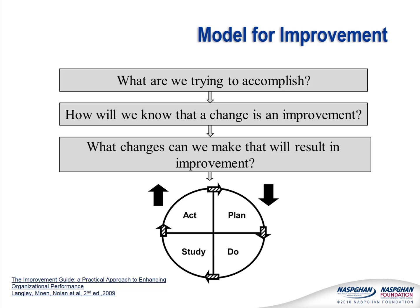The Model for Improvement consists of two main principles. The first is asking three questions to establish a framework for the improvement that you want to conduct. Number one: what are we trying to accomplish? Number two: how will we know that the change is an improvement? And number three: what changes can we make that will result in an improvement?